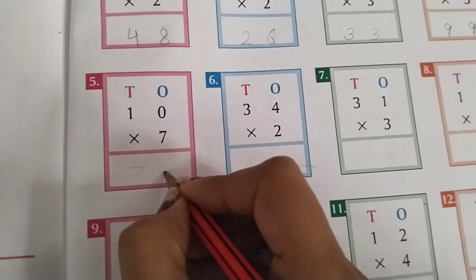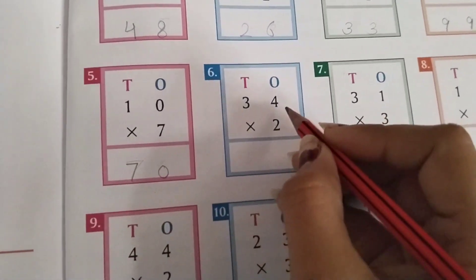10 multiply 7. 7 0s are 0. 7 1s are 7. 70 will be the answer.